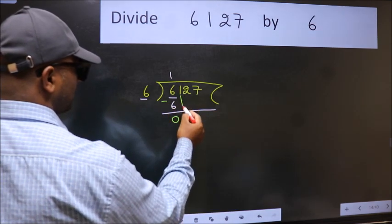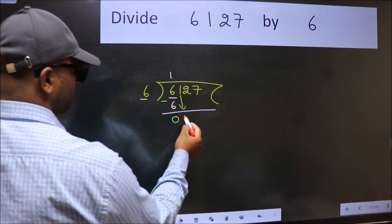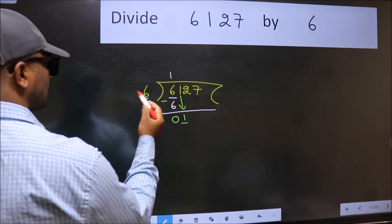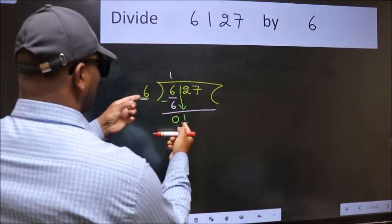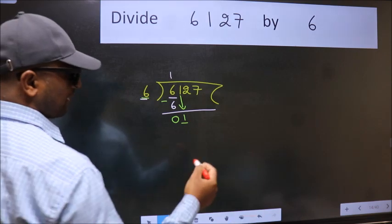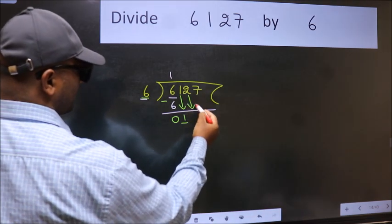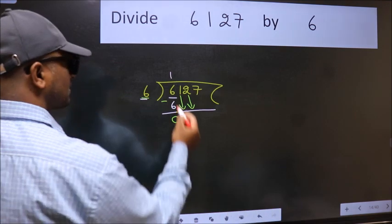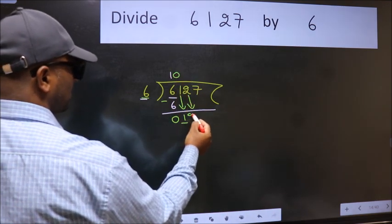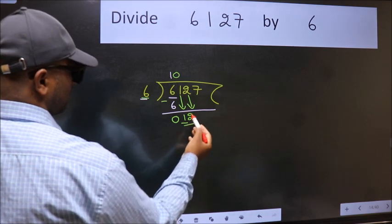After this, bring down the beside number. So 1 down. Now here we have 1 and here 6. 1 is smaller than 6, so we should bring down the second number. And the rule to bring down second number is put 0 here. Then only we can bring this number down.